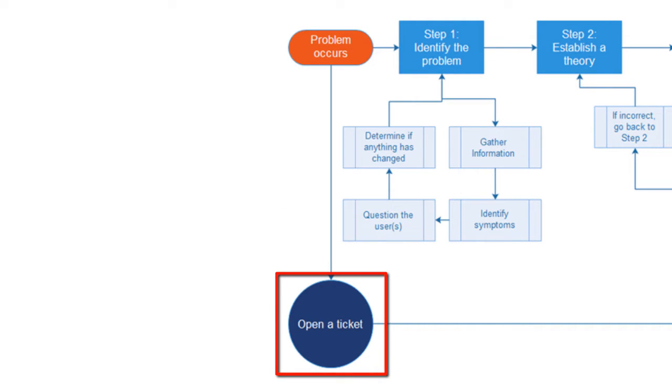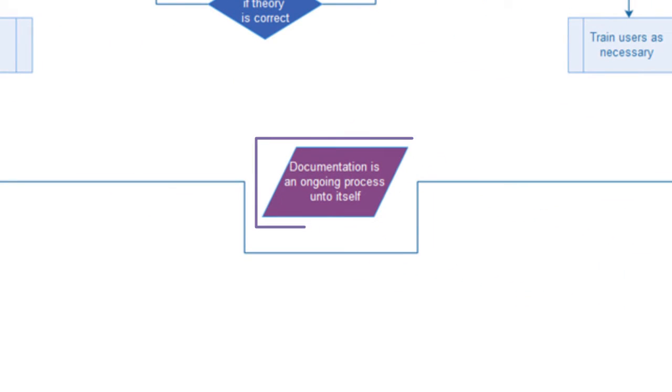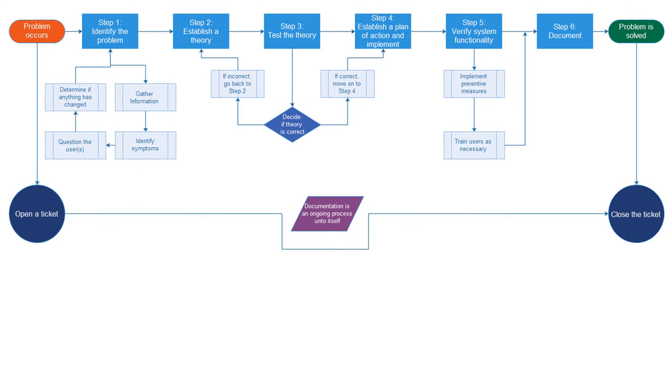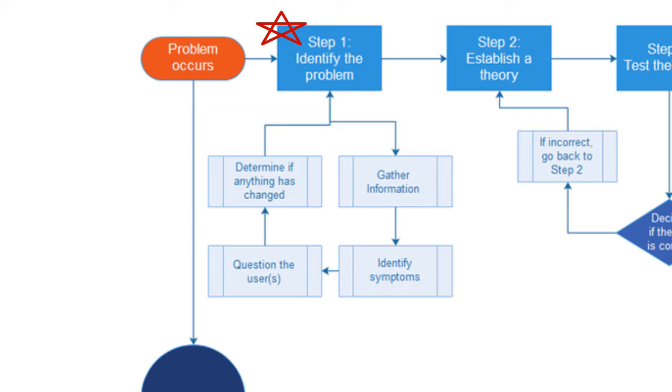And the first thing you want to do really is open a ticket. Most companies, most organizations will have some type of trouble ticketing software or some type of paperwork that you'll need to start. And so you're going to want to do that. Documentation is an ongoing process unto itself. So this documentation will continue. This ticket will continue until the end of the whole process. But step 1 is identifying the problem. You're not actually doing anything yet. You want to go to the computer, look at it, listen to it. You want to gather information. You want to identify symptoms.